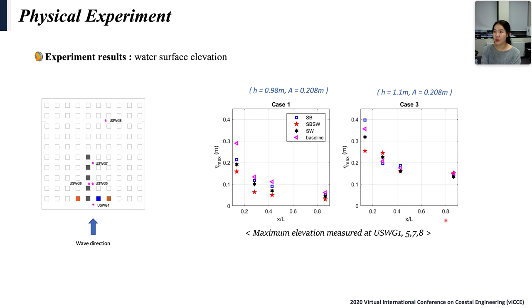Generally, elevations measured at seawall is smaller than these at submerged breakwater. In case 1, with low water level and high tsunami height, there are significant differences between magnitudes of elevations. However, in case 3, with high water level and high tsunami height, there are little differences in reducing tsunami elevation magnitudes except first building row.